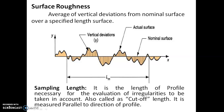Surface roughness is a measure of how a surface is polished. The average of vertical deviation from a nominal surface over a specified length of surface is called surface roughness. Even a highly polished surface may have some peaks and valleys, and those peaks and valleys constitute the surface roughness.